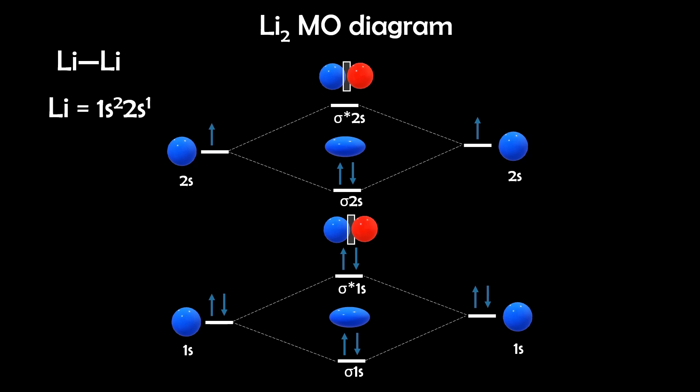Now you'll notice that the 1s orbitals are fully filled, but they also completely cancel each other out because one bonding and one antibonding pair are present. So they contribute zero bond order. And this shows that the inner or core electrons usually don't contribute to the bonding. It's the valence electrons that matter. In this case, the 2s electrons are the bonding electrons. So lithium-2 has a bond order of 1, meaning it's weakly single bonded and diatomic.